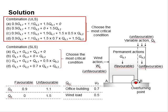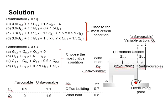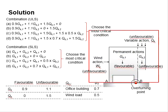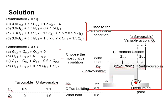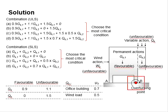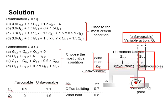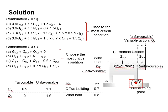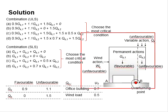Next, check the different combinations of actions for the ultimate limit state and serviceability limit state. You need to identify whether permanent actions, variable actions, and wind actions are favorable or unfavorable, based on static equilibrium at point B. Actions which enlarge the moment at B (sigma MB) are considered unfavorable, while actions which reduce the moment at B are considered favorable. The relevant favorable and unfavorable factors of safety are summarized accordingly.